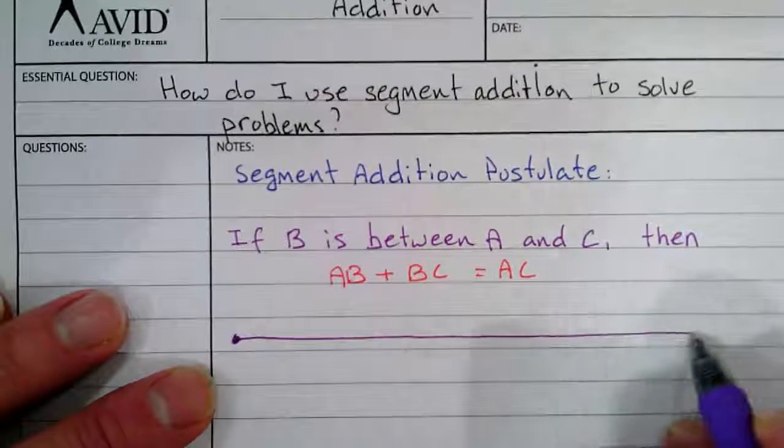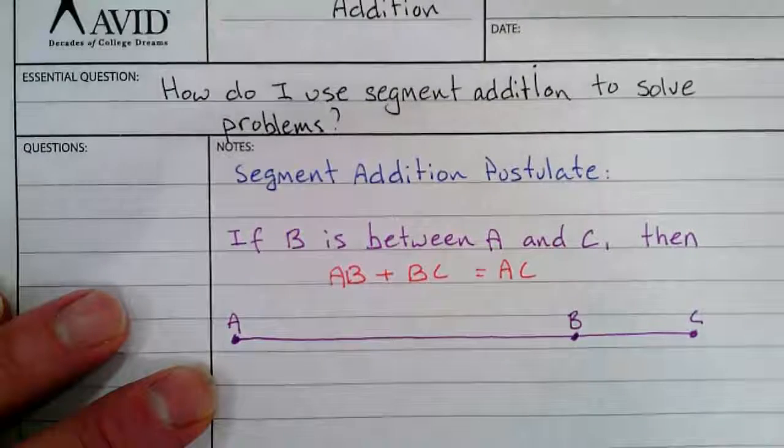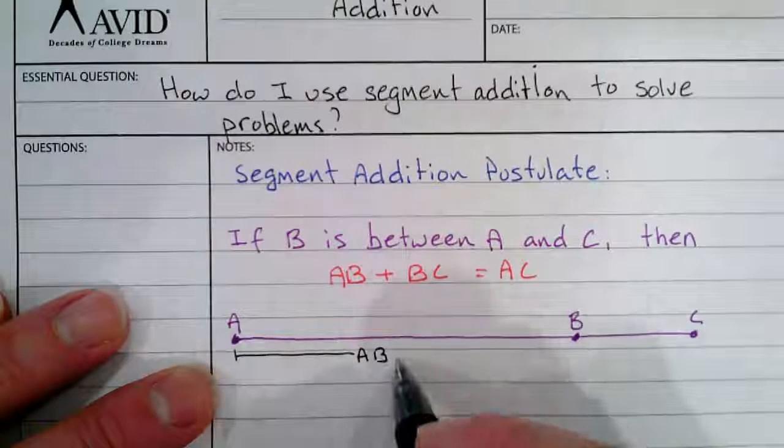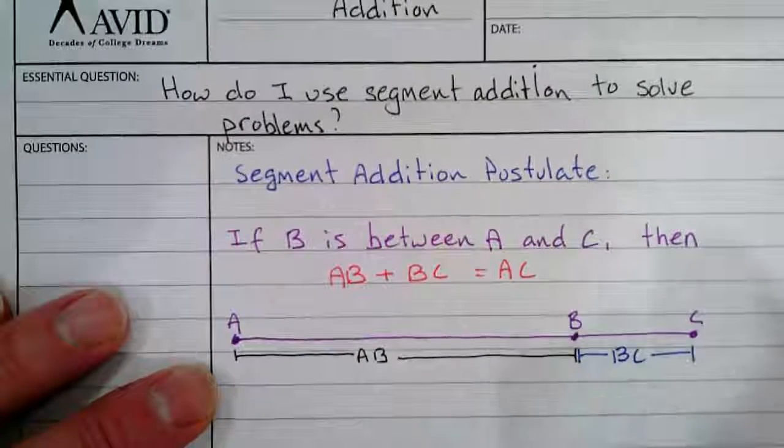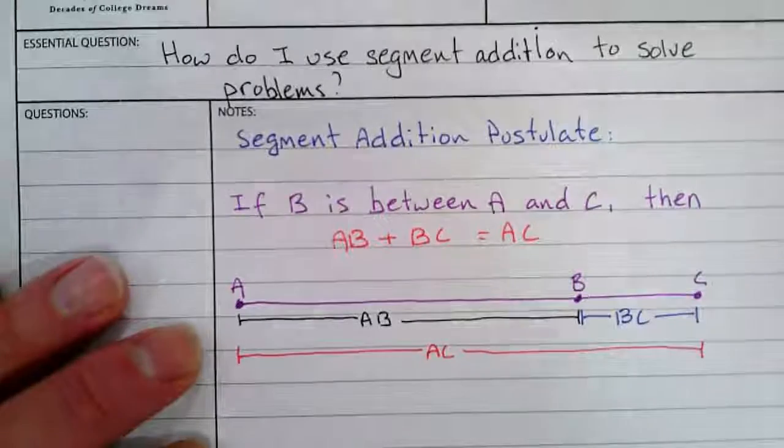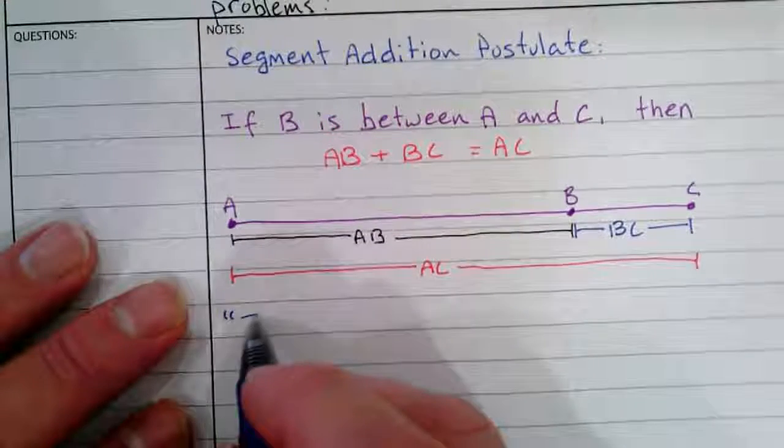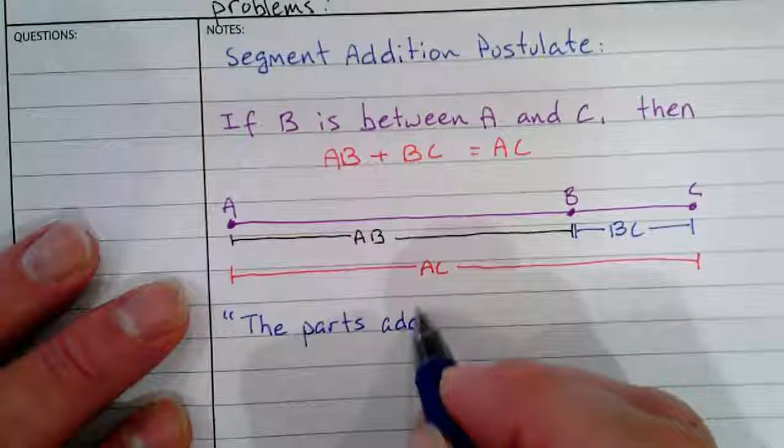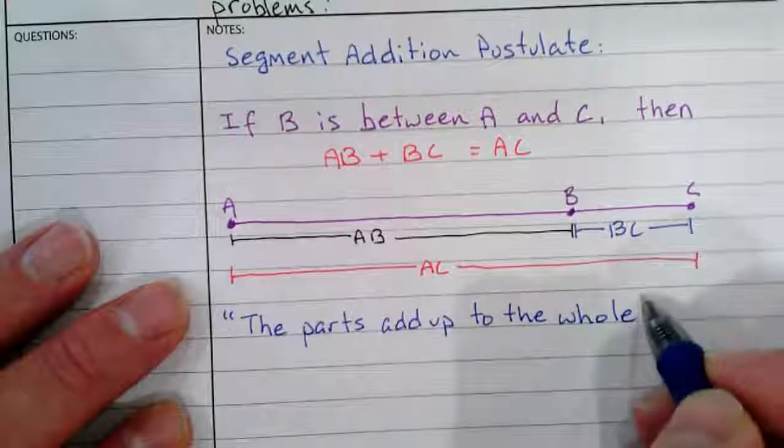This helps to have a diagram, so it looks something like this: A, B, C. And this would be AB, this would be BC, and the whole thing all together would be AC. In kind of a shorthand way, it means the parts add up to the whole.